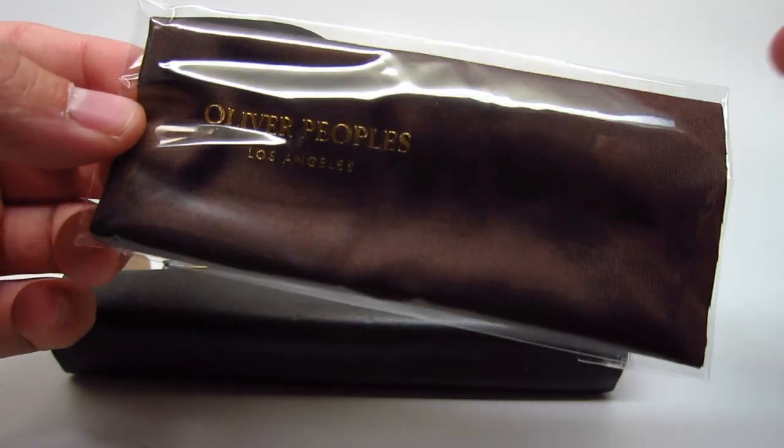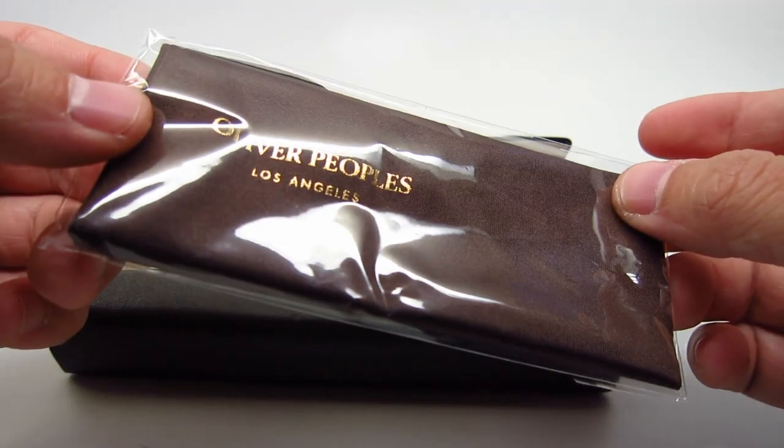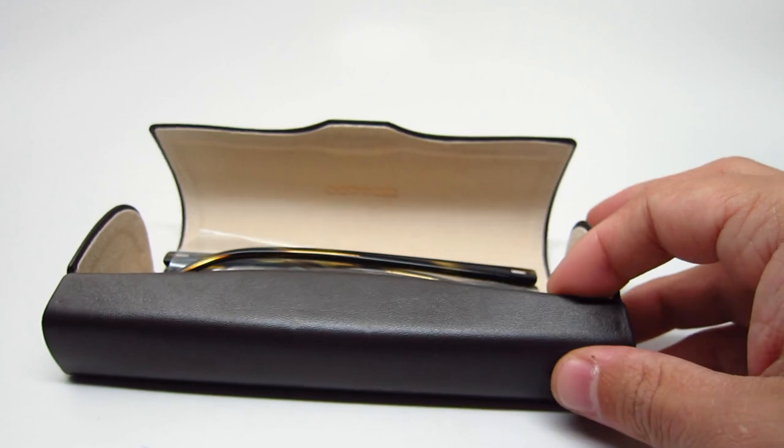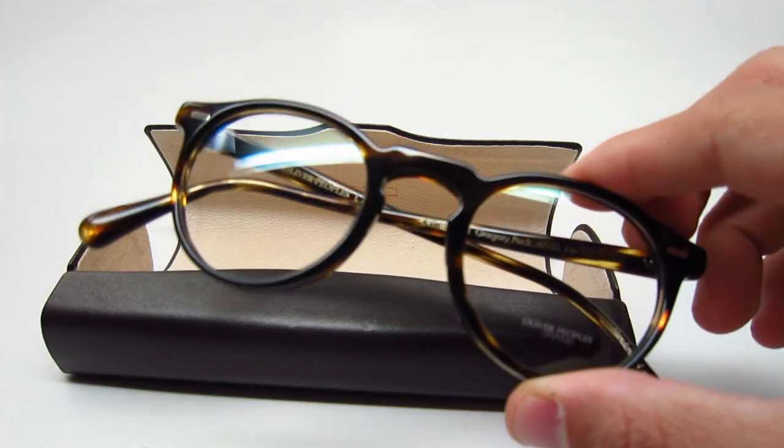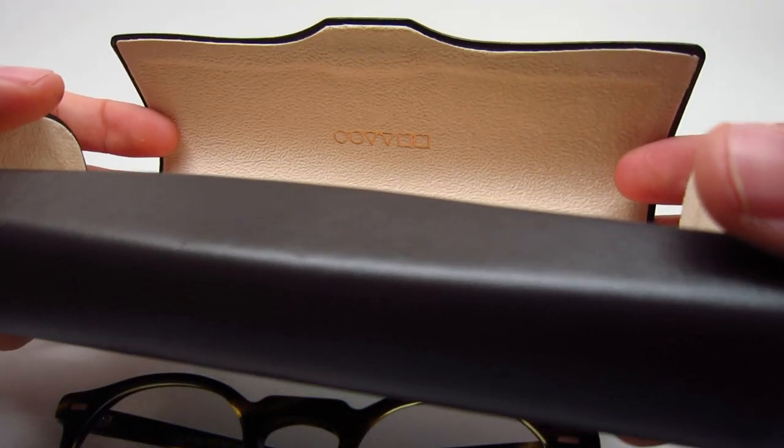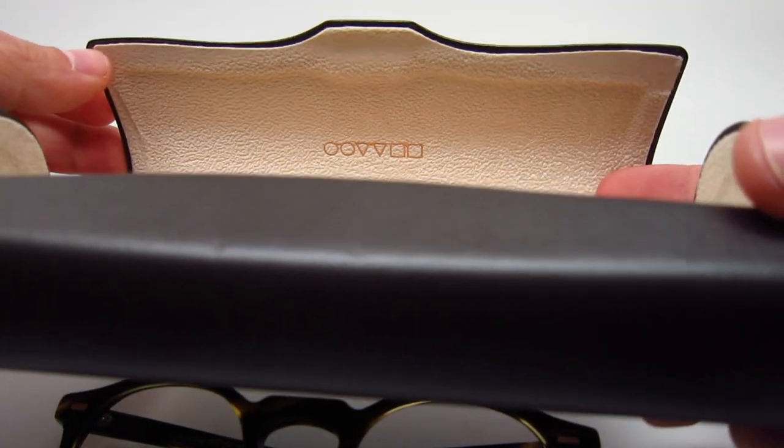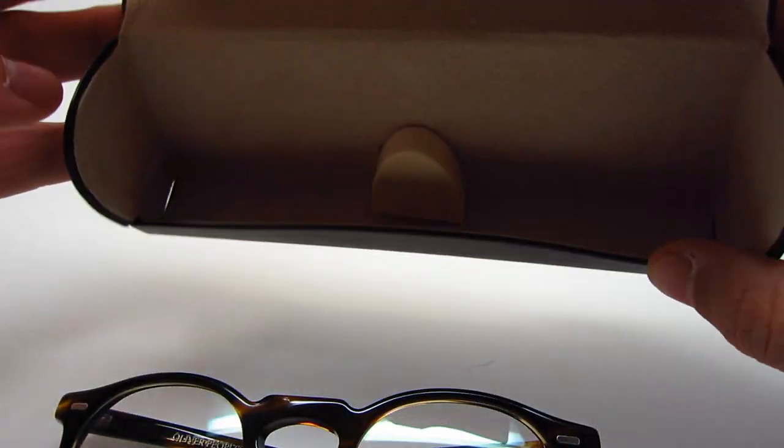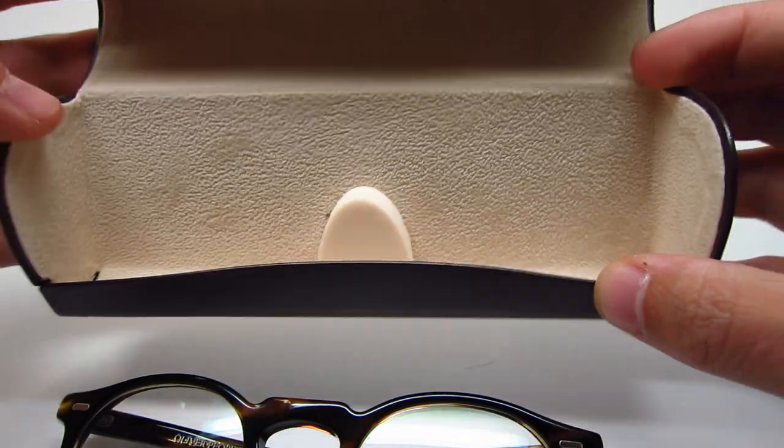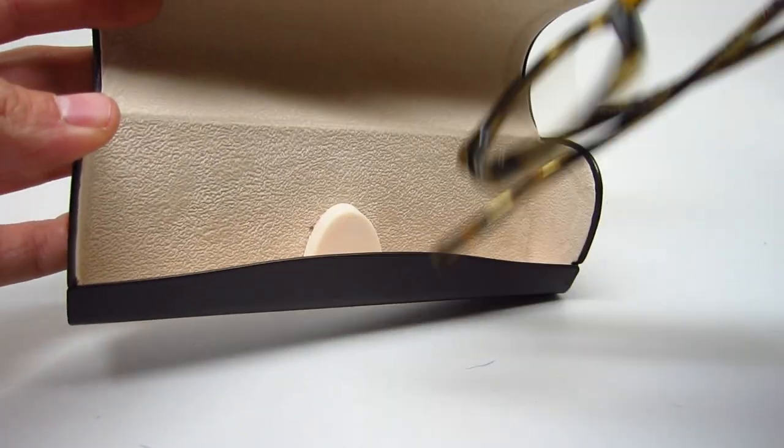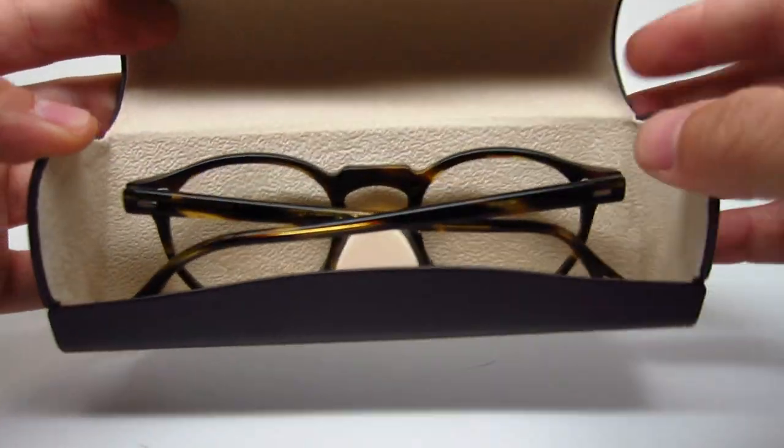It's a pretty big cloth. And on the inside, we get the frames. Just show you the inside a little bit. It has the Oliver Peoples logo on the inside. And this piece here, it's so that you can just rest the nose, the bridge here.